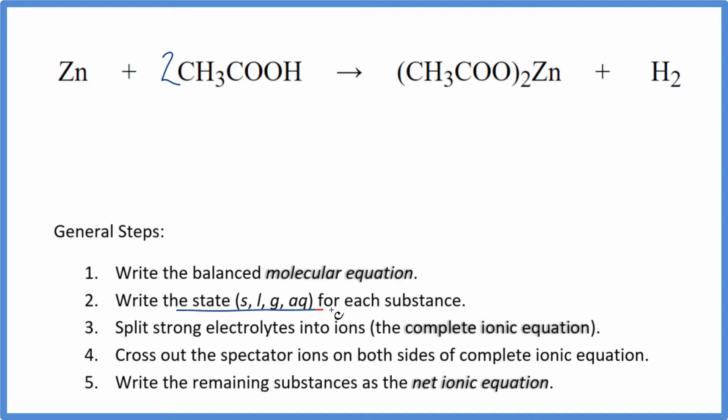Next, let's write the state for each substance. So zinc is a solid, we're going to write s for solid. And acetic acid, this is a weak acid, so it's a weak electrolyte, but it will dissolve, just won't dissociate. So we're going to write aq, but we want to come back to that. Be careful with these weak acids.